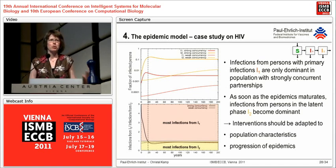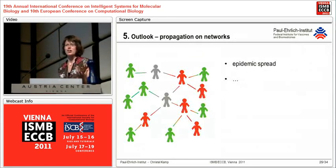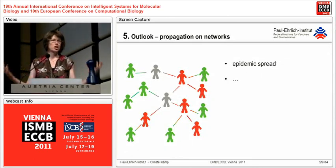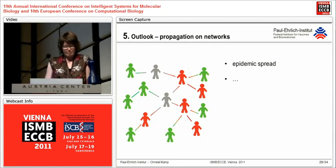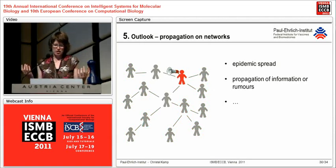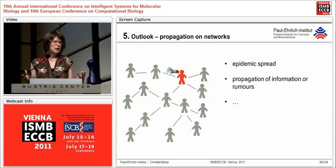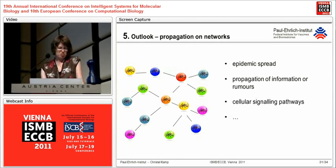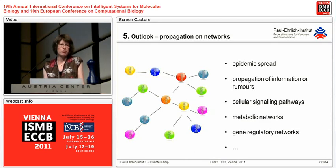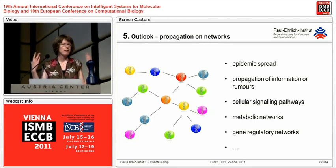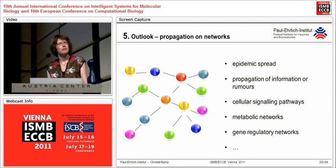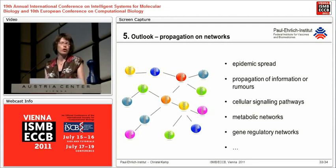We have been looking at epidemic spread, which is largely propagation on a network. One could also think of applying this to propagation of information or rumors on networks, and perhaps also to cellular signaling pathways, metabolic networks, and gene regulatory networks. There are certainly many differences to address, but there may be ideas worth discussing about transferring some of these concepts to other systems.